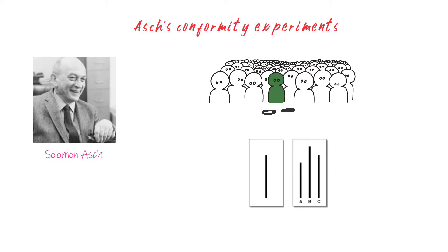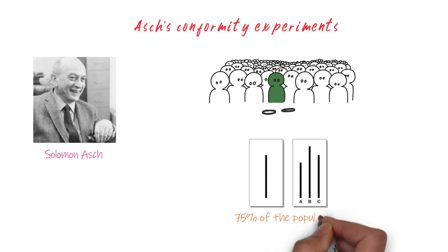There were 18 different trials and the test subjects gave the incorrect answer in 12 of them. Asch concluded that 75% of the population would succumb to conformity.